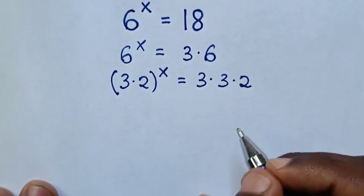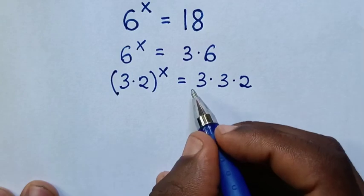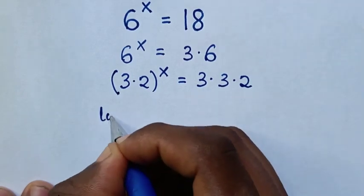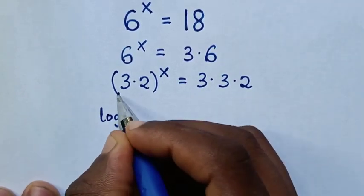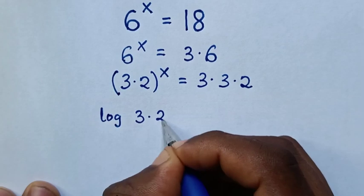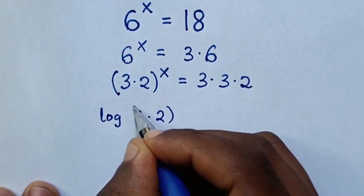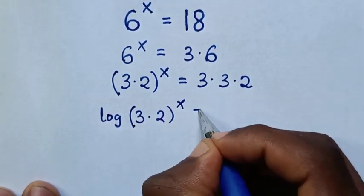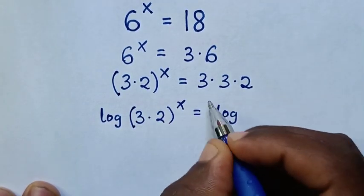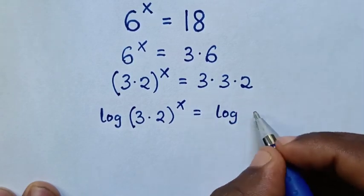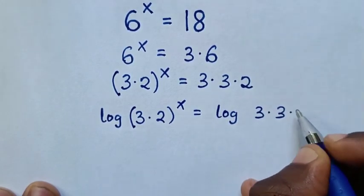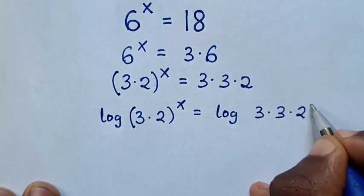Then in the next step, we will apply log to both sides. So it will be log of the bracket 3 times 2, power of x, is equal to log of this bracket 3 times 3 times 2.